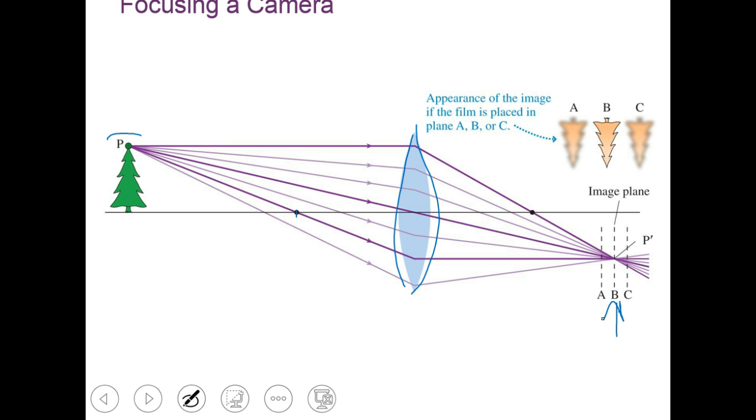The way a camera focuses an image then, at least the old school ones, is they would move this film back and forth until it found the focused place. Some cameras opt to have the lens move back and forth to focus it on the film. That's definitely the more common version. But just like your lab last week, if you have to adjust the screen to get a just right focused image, cameras do the same thing.